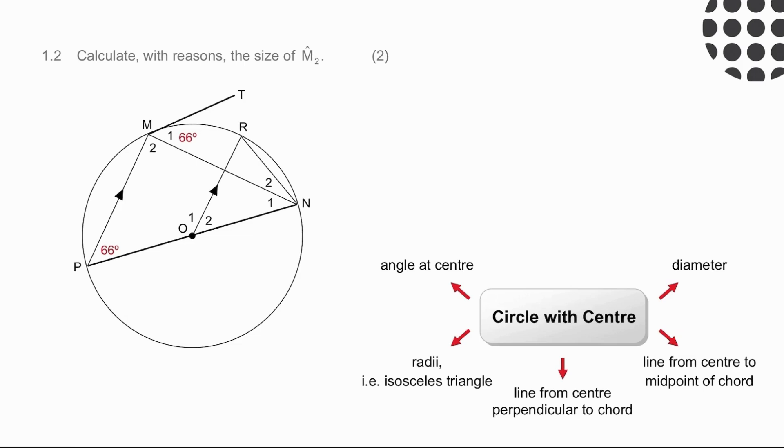In question 1.2, we need to find the size of angle M2. So if we have a look at the sketch, and because we can see that it's the angle that we worked with earlier, so we're simply going to double check. The angle is subtended by the diameter, so we can claim that it equals 90 degrees, and simply write up our answer.